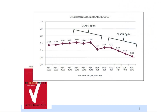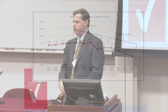You see rates of hospital-acquired infections falling — these are central line associated bloodstream infections. There's a group of Premier hospitals that decided to work on this, and rates are going down. This is true not just in those hospitals, but across New York State data and CDC data across the board.